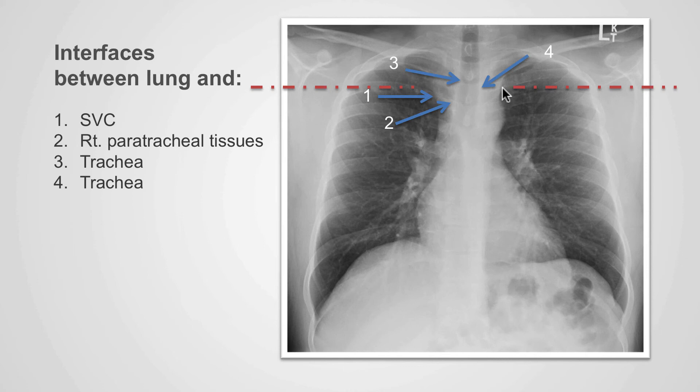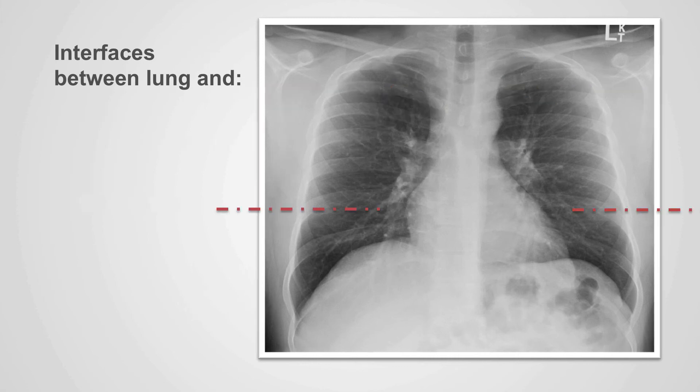On this side, we can identify a clear border. And do you know what that is caused by? That is the interface between the lung and the subclavian artery. Now if we moved our line more inferiorly, we can also identify various interfaces.